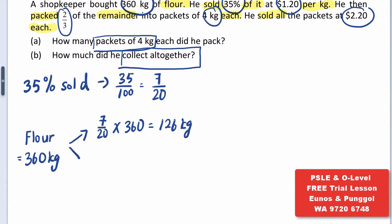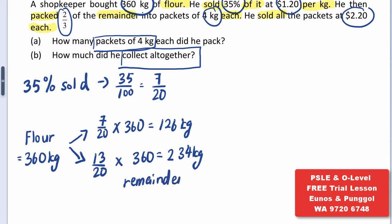And he packed two-thirds of the remainder. So, if he has sold 7 out of 20 of the flour, that means he had 13 out of 20 flour left. We multiply by 360 kilograms — that makes up 234 kilograms. So this is the remainder. He packed two-thirds of the remainder, so that will be two-thirds of 234, which makes up 156 kilograms.